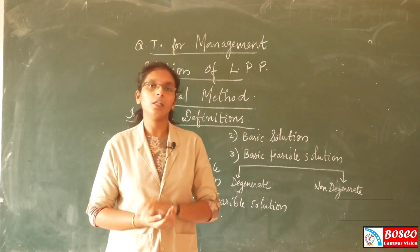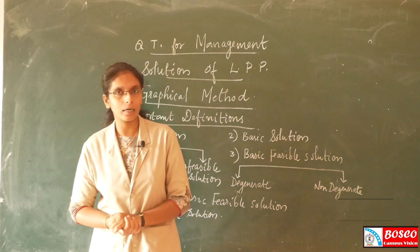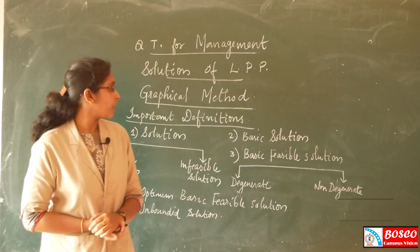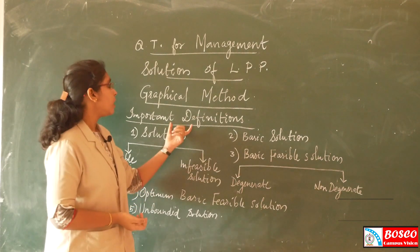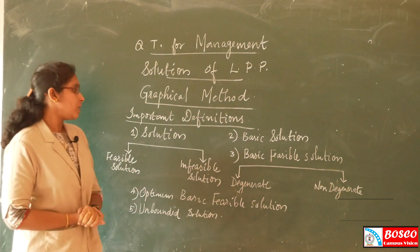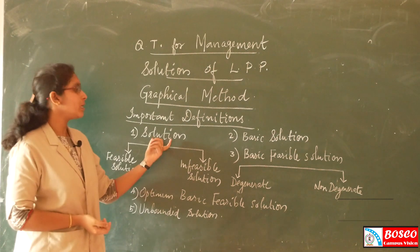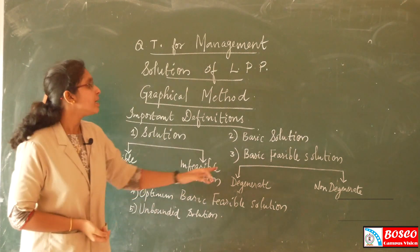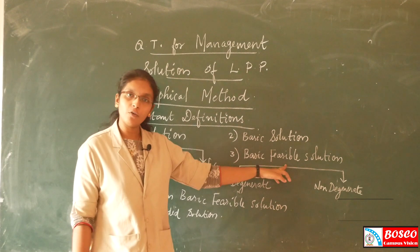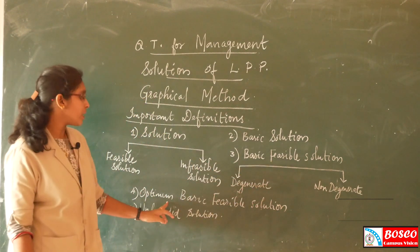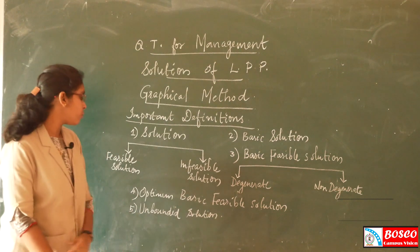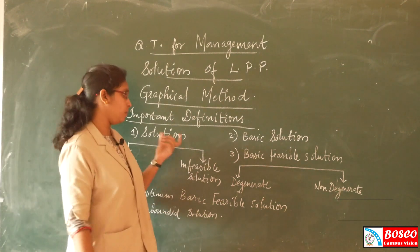We will use the Graphical method and study its procedure, along with important terms and definitions. We have to study 5 definitions: 1st is Solution, 2nd is Basic Solution, 3rd is Basic Feasible Solution, 4th is Optimum Basic Feasible Solution, and 5th is Unbounded Solution.